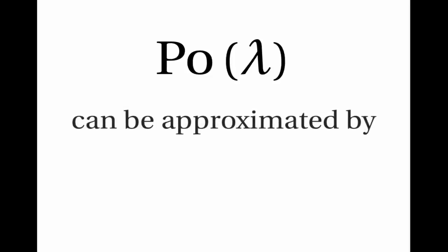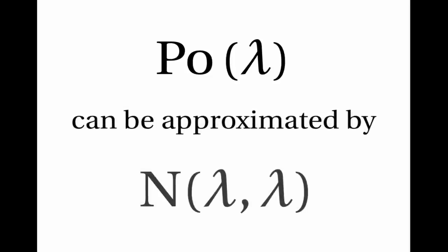In general, the Poisson distribution with parameter lambda, where lambda is the expected number of events, can be approximated by the normal distribution with mean lambda and variance lambda.